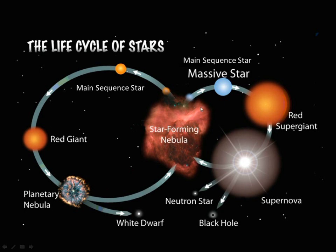Now if a star is more massive, that's the exciting part. A massive main sequence star turns into a red supergiant, and reaches the critical supernova stage where the gas actually contracts — because the gravity is so great — and causes a supernova. From there we can get a black hole, or the material returns to a nebula where new stars are formed again.